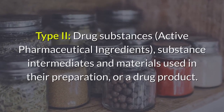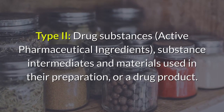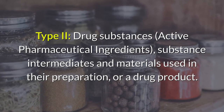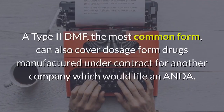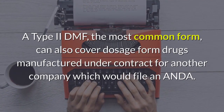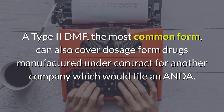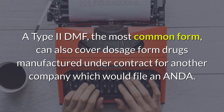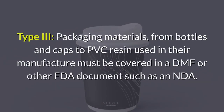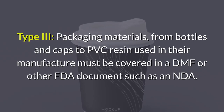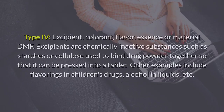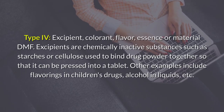Type 2 covers drug substances, active pharmaceutical ingredients (APIs), substance intermediates, and materials used in their preparation, or a drug product. The Type 2 DMF, the most common form, can also cover dosage form drugs manufactured under contract for another company which would file an ANDA. Type 3 covers packaging materials — from bottles and caps to PVC resin used in their manufacture — and must be covered in a DMF or other FDA documents such as an NDA.